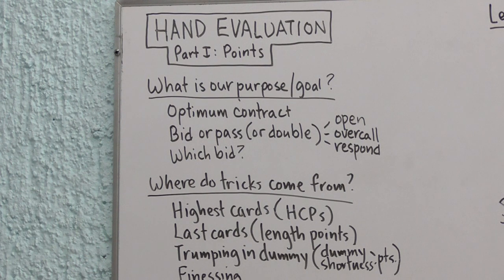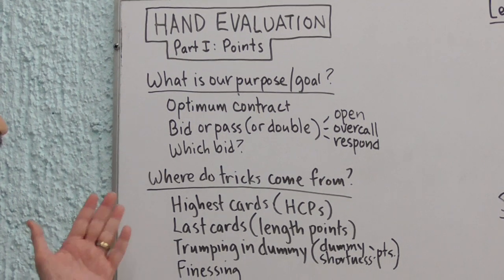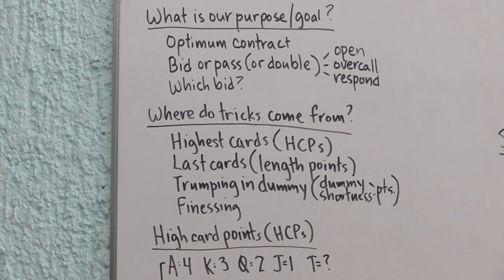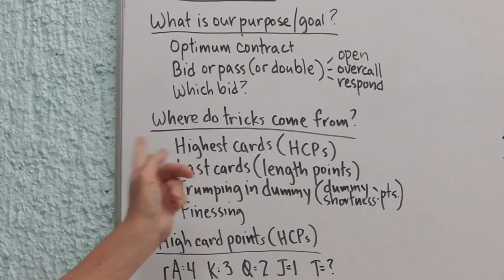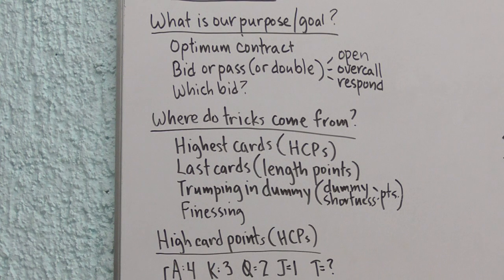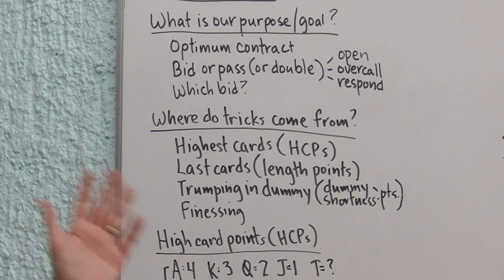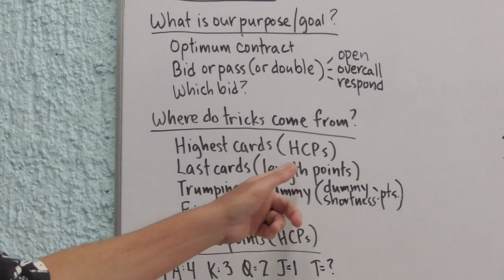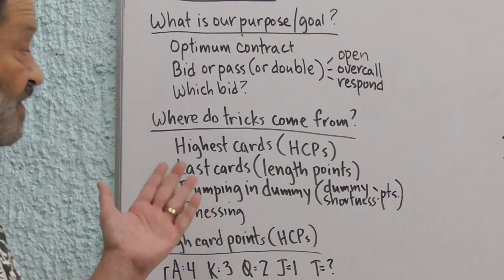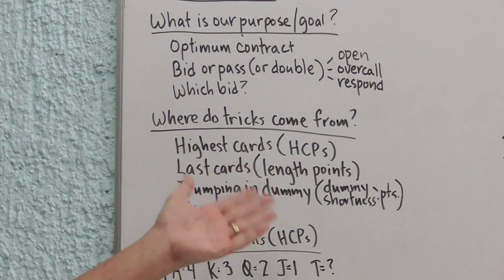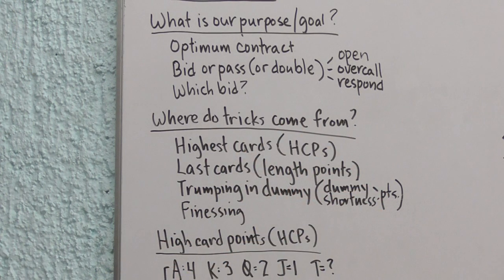First, we're going to consider where do tricks come from? Well, unless it gets trumped, the highest card in the suit is going to win a trick. And high cards, aces, kings, and on down the line, are measured with what are called high card points. We also get tricks with the last cards in the suit. If everybody else has run out of that suit, we can continue taking tricks with the little cards. And for that, we award ourselves length points. We also manufacture tricks by trumping in dummy. And we call shortness points or dummy points by those names.